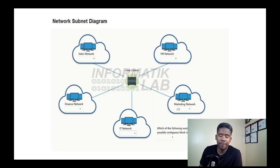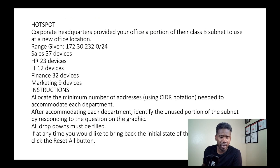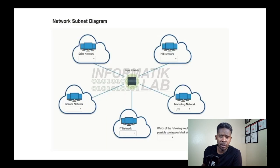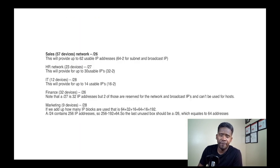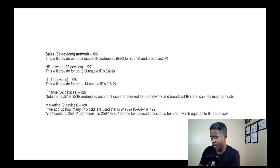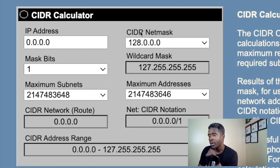In the diagram we have a Sales network, Finance network, IT network, Marketing network, and HR network. Starting with Sales — 57 devices — we need a network prefix of /26. Let me show you why using the CIDR subnet calculator.